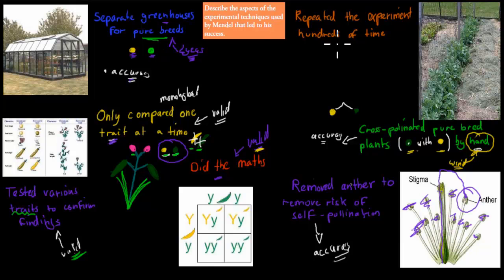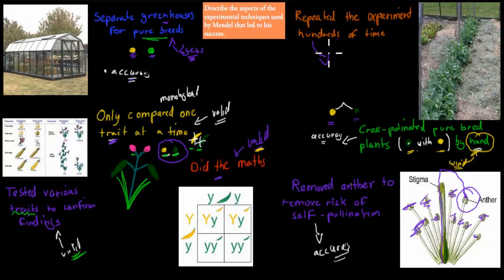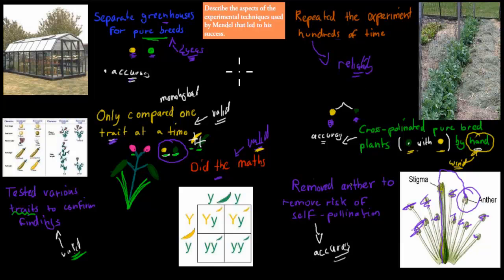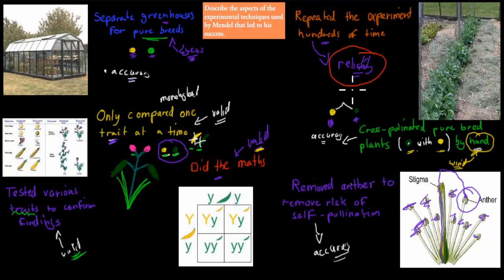He also repeated the experiment hundreds of times. He didn't just cross one yellow plant with one green plant — he did this experiment hundreds of times. This increases reliability. If he had only done it once, maybe the result was a fluke and a second attempt might give a completely different result. But by doing it hundreds of times across every different trait and always getting consistent results, he could make sure his findings were reliable.